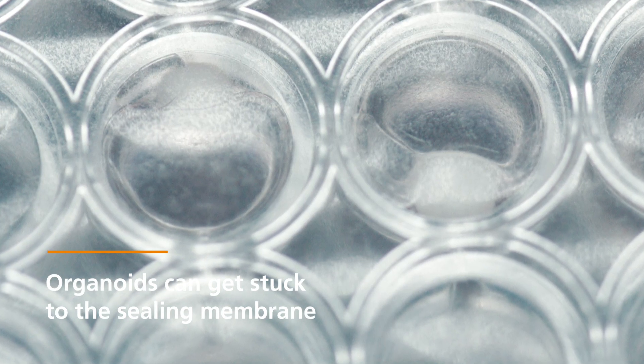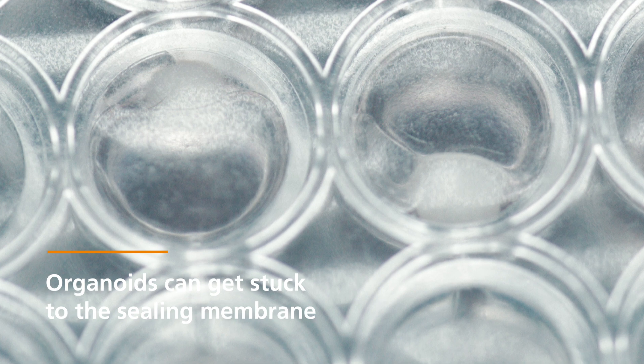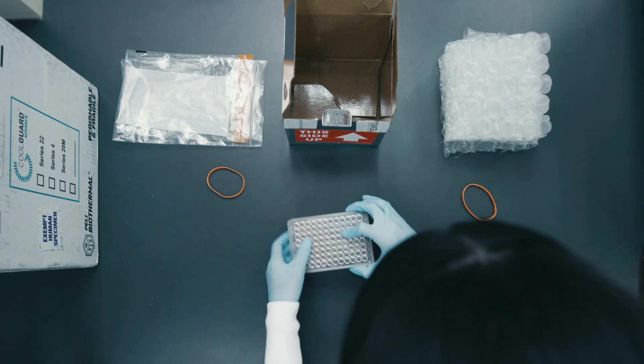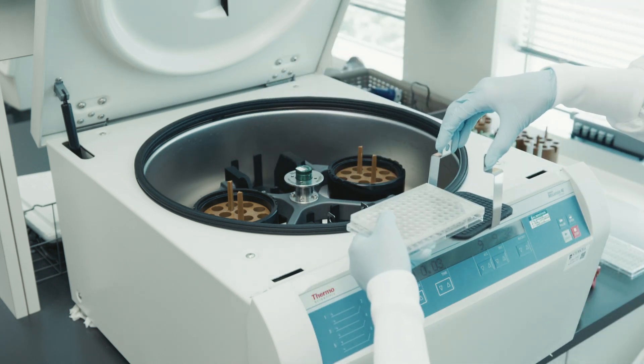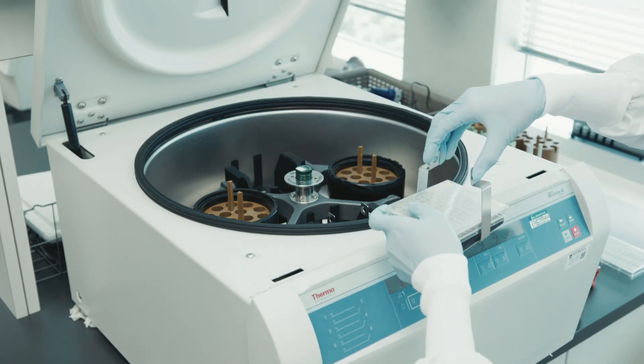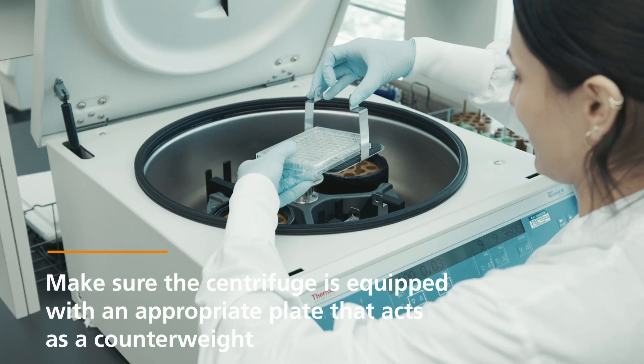During transportation, the neural organoids can get stuck to the sealing membrane. To get these organoids back into their wells, the plate should be centrifuged at 100g for 3 minutes. Make sure the centrifuge is equipped with an appropriate plate that acts as a counterweight.